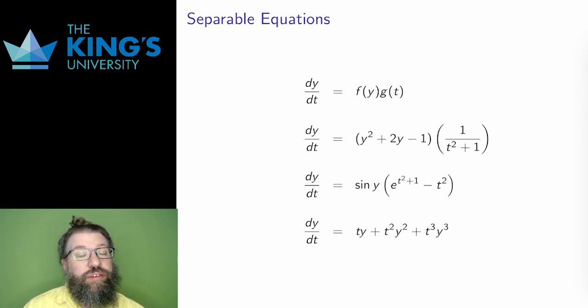It's no longer necessary to assume these are autonomous. If they are, then there will be a phase line, and that phase line can visualize what's going on, but if they're not, I can still talk about the direction field and the integral curves.